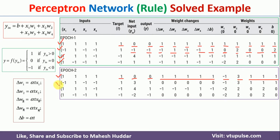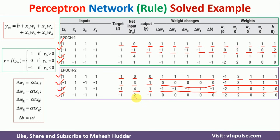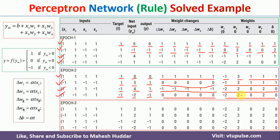For the second input in iteration 2, the output matches the target so no weight update is needed and weights remain the same. For the third input, y_in = 4 which is greater than 0, so output = 1, but target = -1 — they don't match, so we calculate delta terms and update the weights. For the fourth input, y_in = -2, output = -1, target = -1 — they match, so no weight update. Since there was a weight change in this epoch, we continue to another iteration.